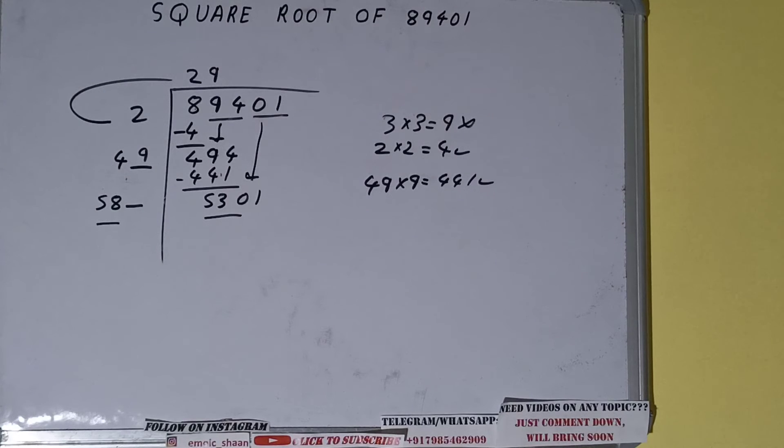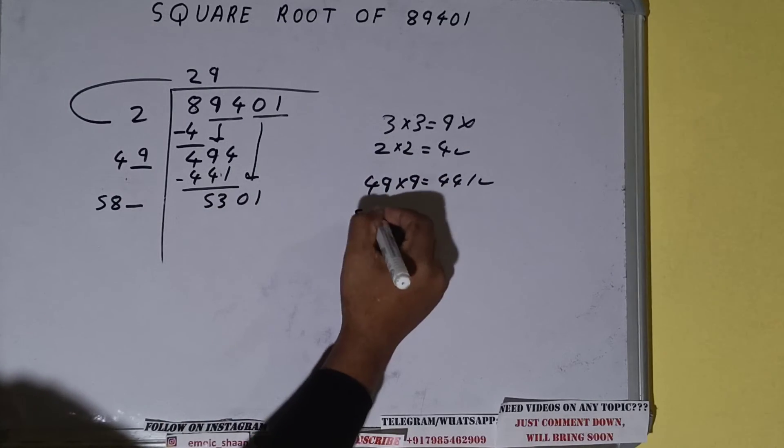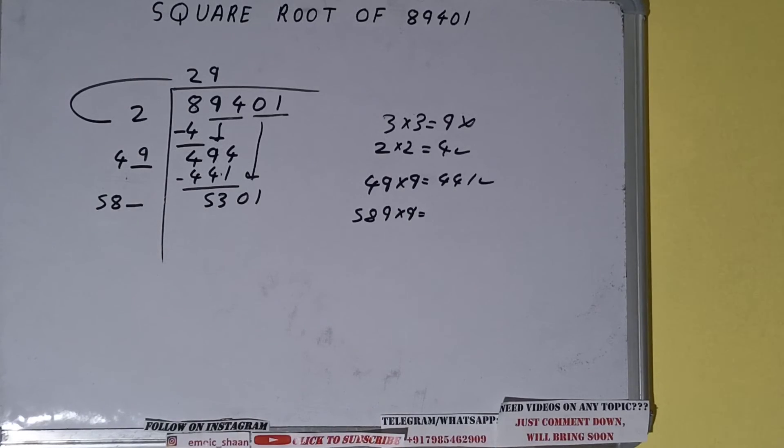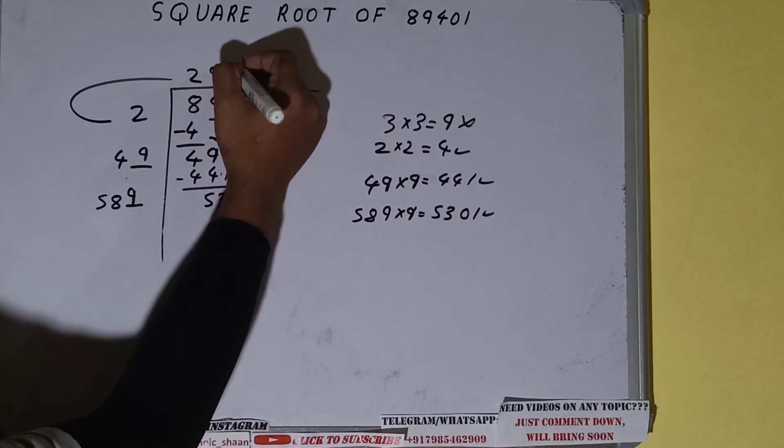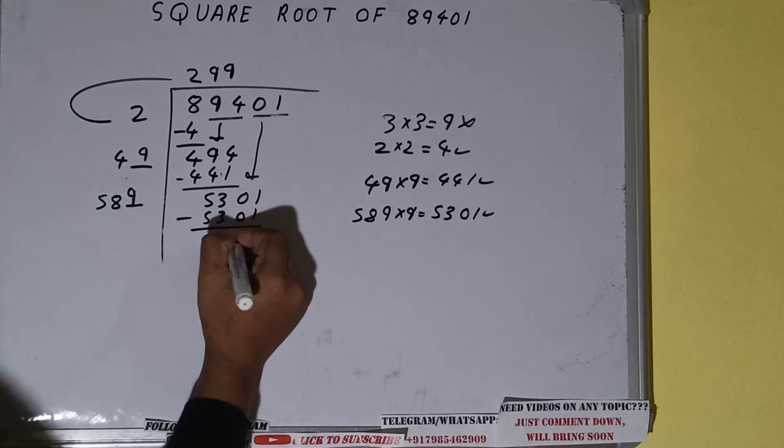So we can compare this 58 and 530. So 58 9 is 522, so we can try 9 times. So 589 into 9 we can try. It will be 5301 which is good to take. So 9 here and 9 here. 5301 subtract and we'll be getting 0.